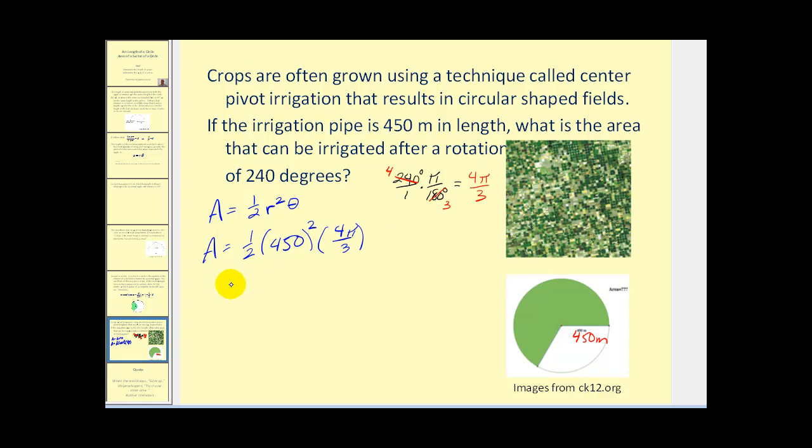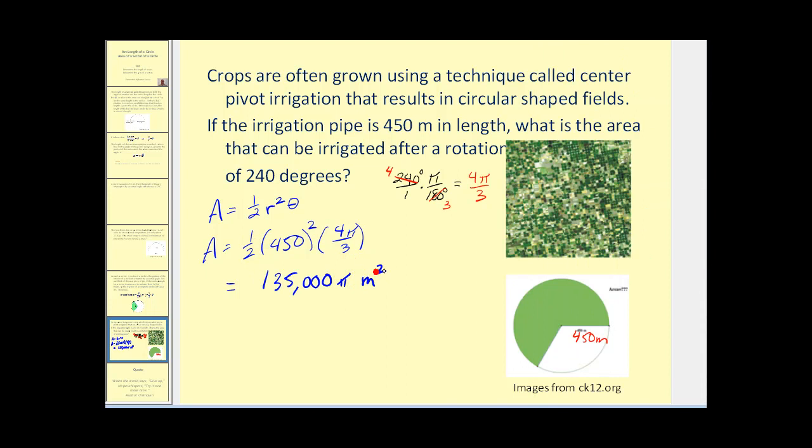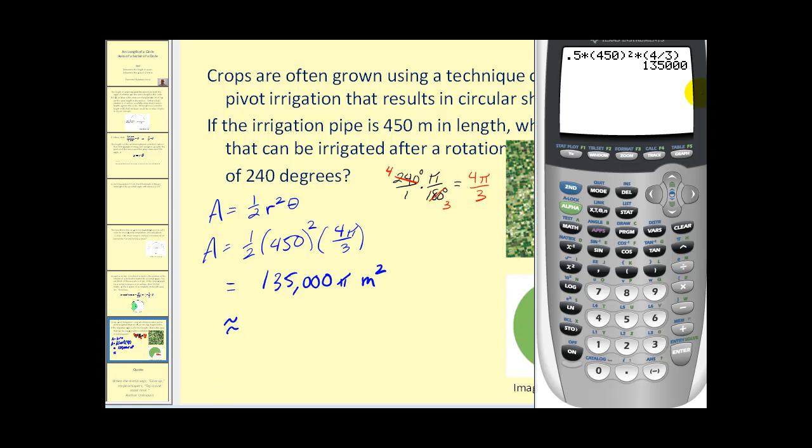Let's go to our calculator. Let's first find the exact value, and then we'll find a decimal approximation. To find the exact value, we'll leave off the π until we get to our final answer. We have ½ or 0.5 times 450 squared times 4/3. We'll add the π back in our final answer. So we have 135,000π square meters. We're dealing with area now, so we have square units. Let's find the decimal approximation by multiplying by π. We'll just take this previous answer and multiply by π. We have approximately 424,115 square meters.